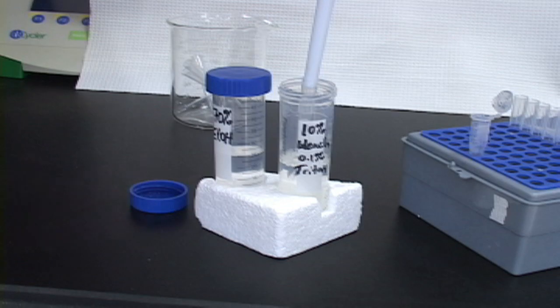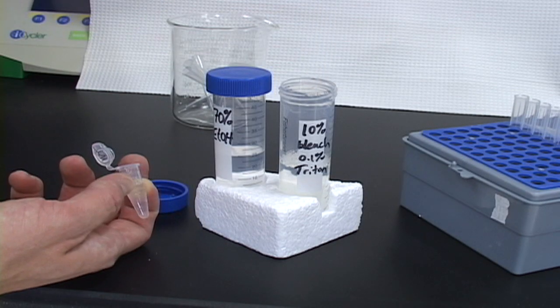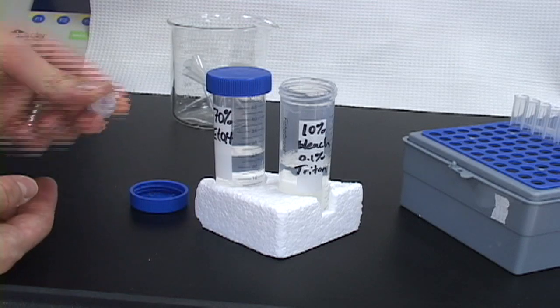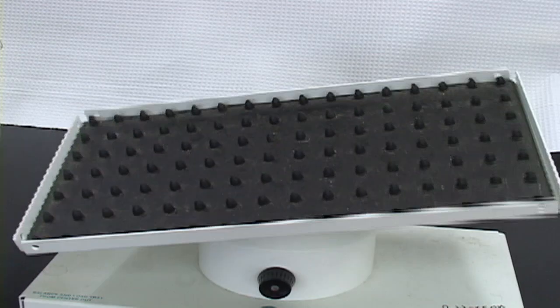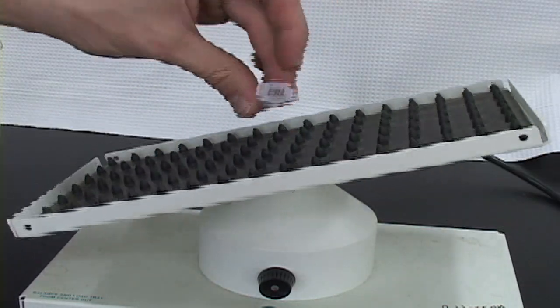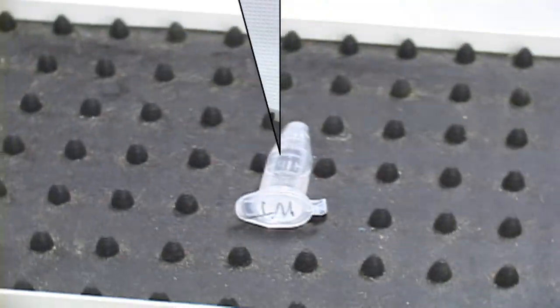Next, add 1 ml of bleach solution to the tube. Close the cap, invert the tube several times to mix, and then place on a nutator or similarly moving device. If a nutator is not available, the same motion can be achieved by using your hand and wrist. Allow the seeds to wash in bleach solution for 20 minutes.